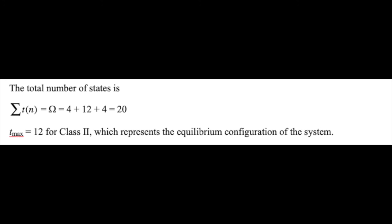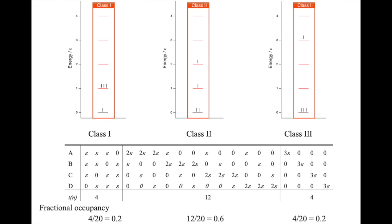There are significant statistical fluctuations in the distribution of microstates. Because of these fluctuations, the system is only in the most probable class of microstates sixty percent of the time. There is a one in five chance of finding the system in class one ensemble, but there is a forty percent chance to find the system not in the most probable class of microstates.